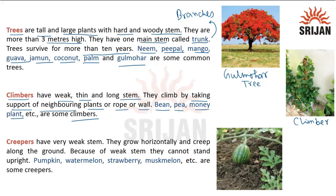Finally, we have creepers. They have very weak stems and grow horizontally, creeping along the ground. Because of their weak stems, they cannot stand upright. Pumpkin, watermelon, strawberry, muskmelon, etc. are some examples. We can see that this is basically watermelon, and this is a creeper.